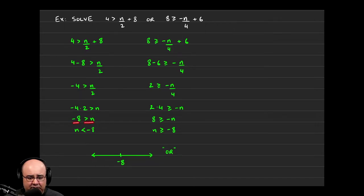Now, I prefer to have my variables on the left-hand side, so all I'm doing is just rewriting this inequality. If negative 8 is greater than n, n has to be less than negative 8. All I'm doing is just reversing the way the inequality is written.